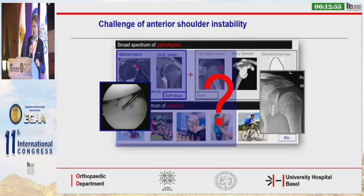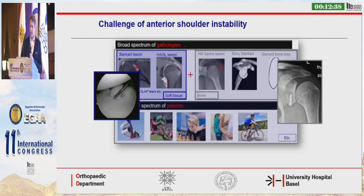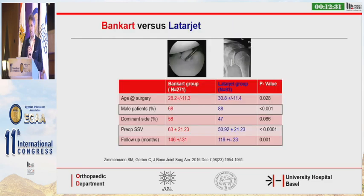All in all, we must ask ourselves whether the Bankart is an ideal procedure to provide long-term stability in patients with soft tissue lesions. Probably we have to expand the bony procedures and also apply them in patients who might not really have a big lesion within the bone. Looking at this study from the Volgas Group in Switzerland, I think we need to expand the bone block procedures in anterior shoulder instability.